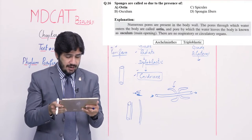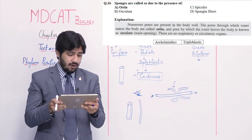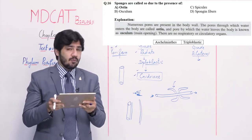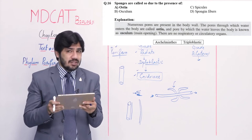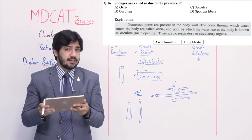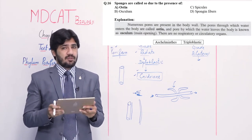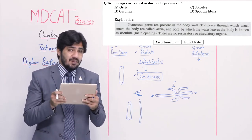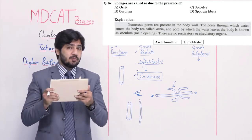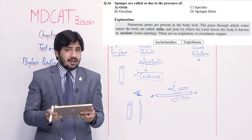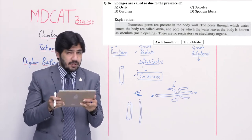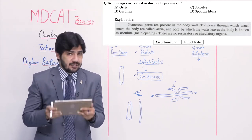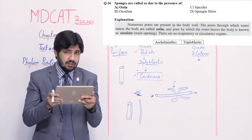Question number 16: sponges are called so due to the presence of — alpha ostia, beta osculum, charlie spicules, and delta spongin fibers. Right options are alpha and charlie. Spicules are the fiber-like skeleton of sponges — different sponges have spicules of different chemical natures. Spongin fibers are protein in nature.